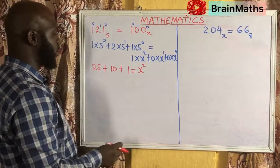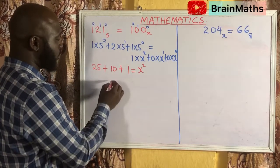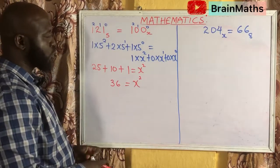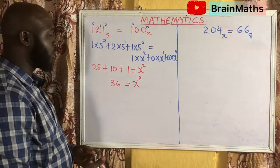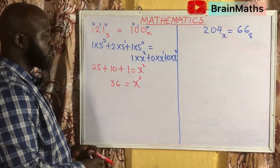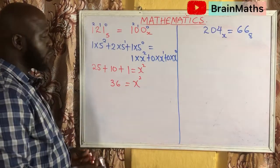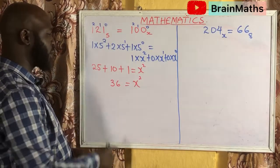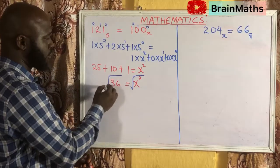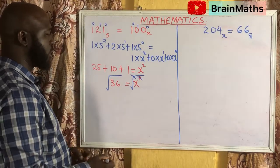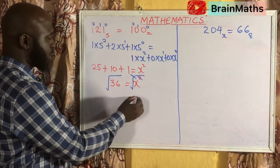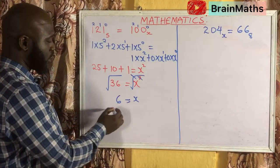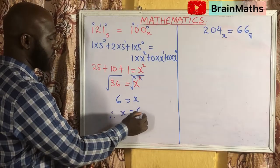Let's evaluate: 5 squared is 25, times 1 is 25. Plus 5 raised to power 1 is 5, times 2 is 10. Plus 5 raised to power 0 is 1, times 1 is 1. So 25 plus 10 plus 1 is 36. On the other side, X squared times 1 is X squared, and the zero terms vanish. So 36 equals X squared. Taking the square root of both sides: X equals 6.